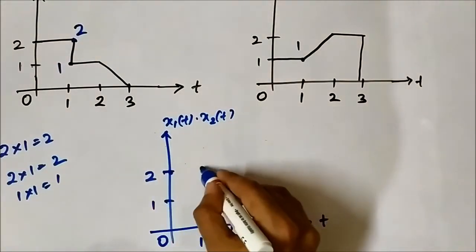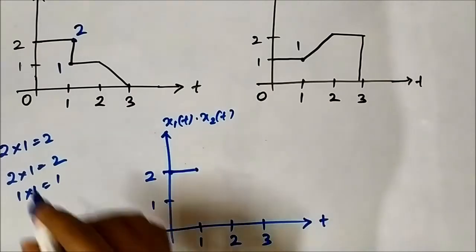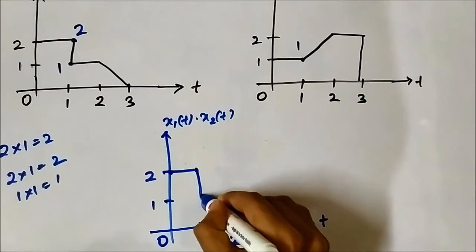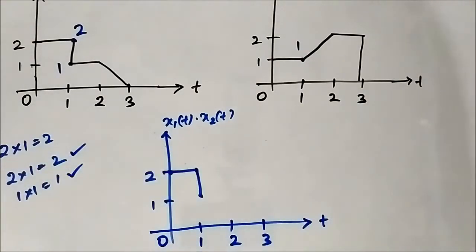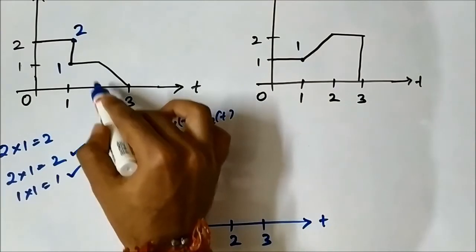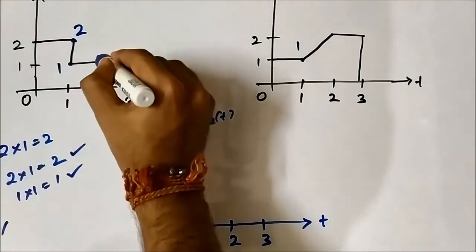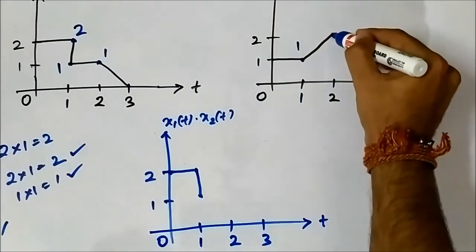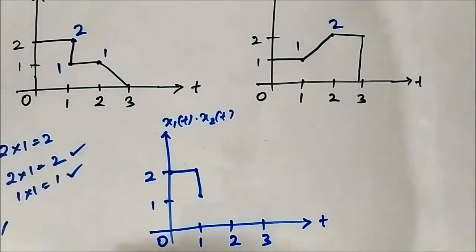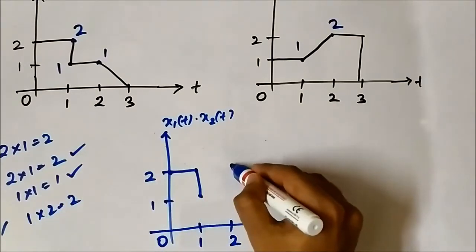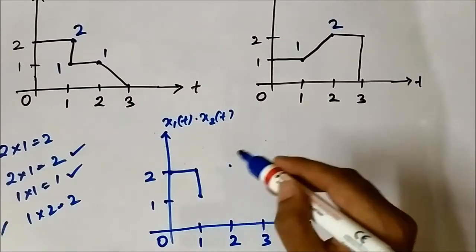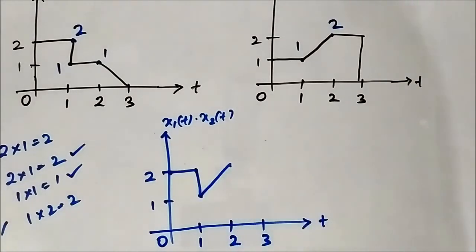So at t equals 1 the signal drops down to 1. Then at t equals 2, x1(t) has a value of 1 and x2(t) has a value of 2, so 1 into 2 equals 2. At t equals 2 the signal increases back to 2.